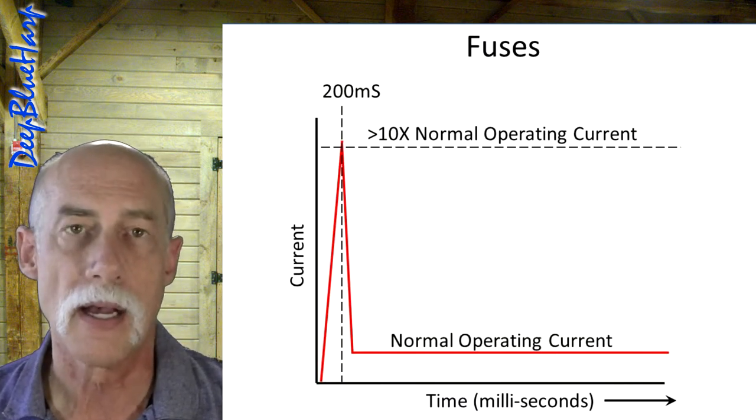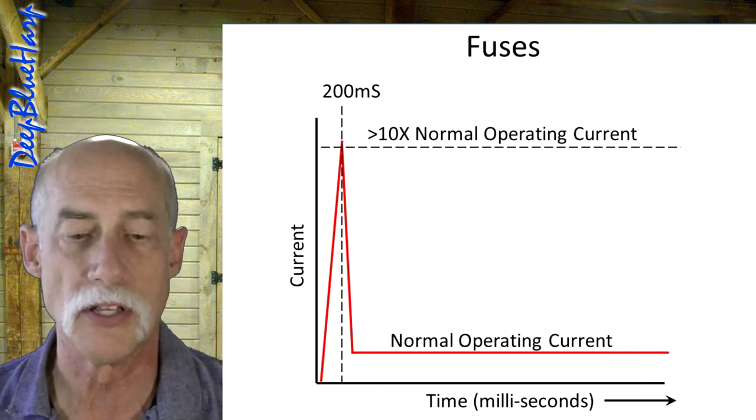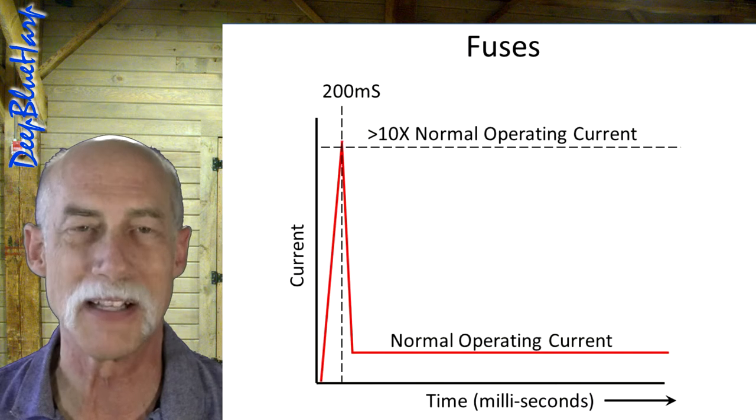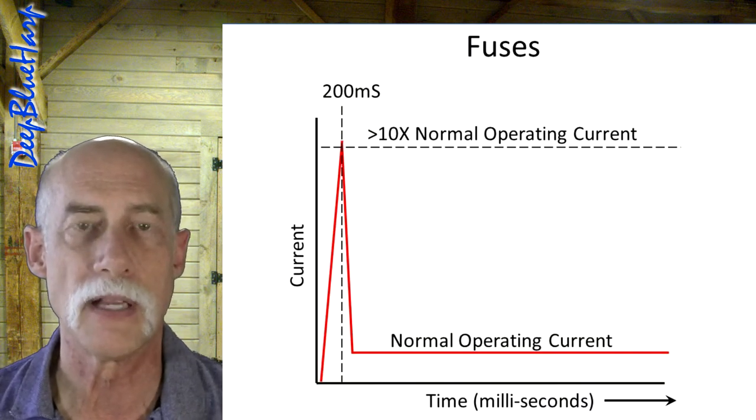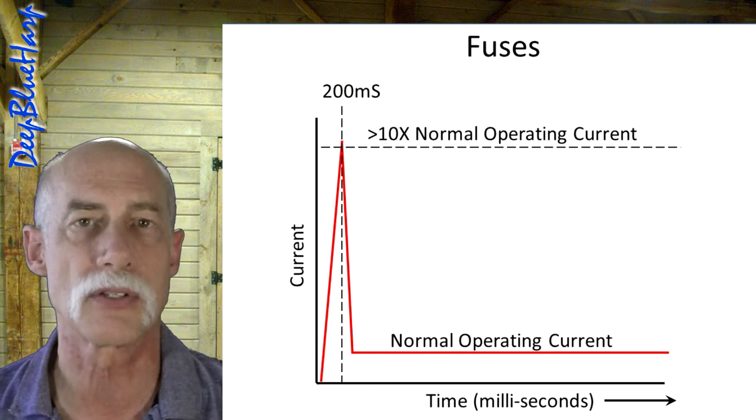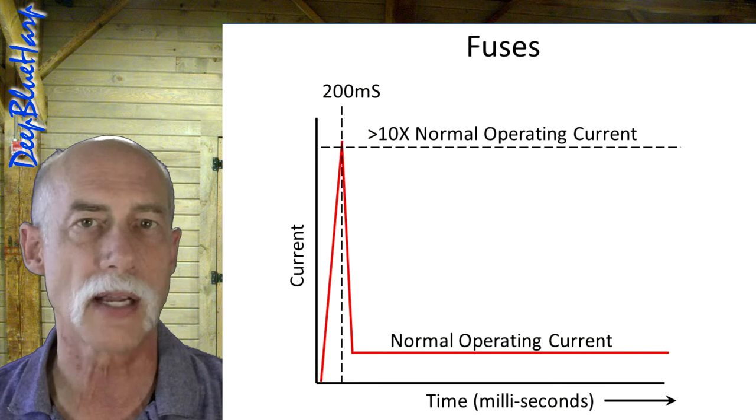A quick blow fuse will not do that. The eutectic point, where it just immediately goes from solid to liquid and breaks, will be instantaneous. So we want something to slow blow. It can actually take the several amps for at least 0.2 seconds.